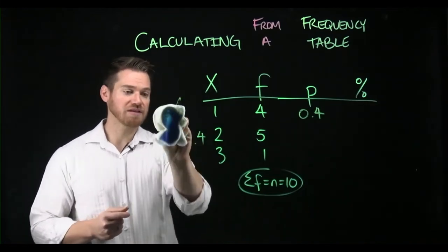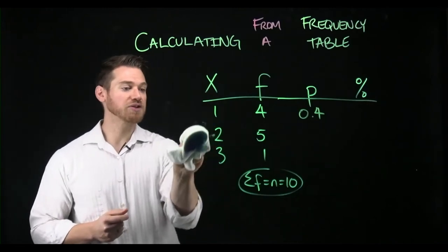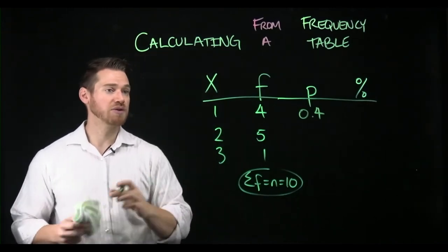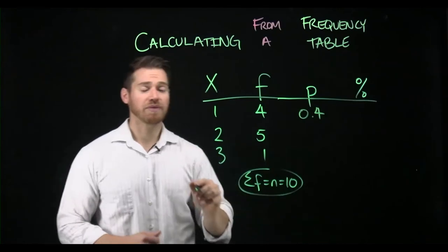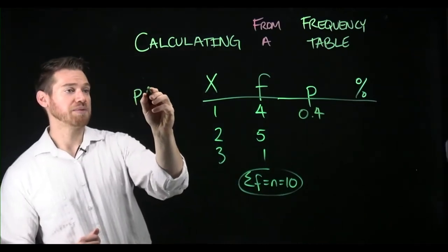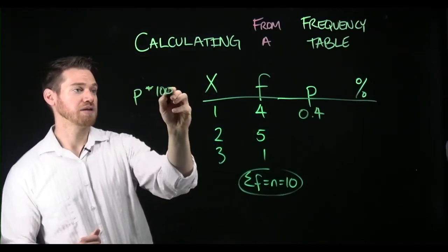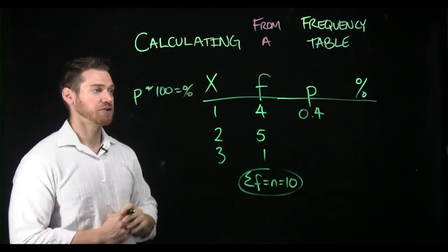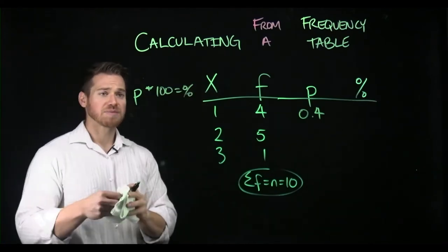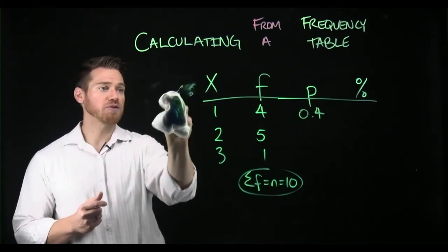So notice a proportion is basically the unadulterated form. If we wanted to turn that into a percentage, all we need to do is multiply it by 100. So if we take a proportion and we multiply it by 100, that becomes a percentage, right? Because percentage, percent means per the 100.